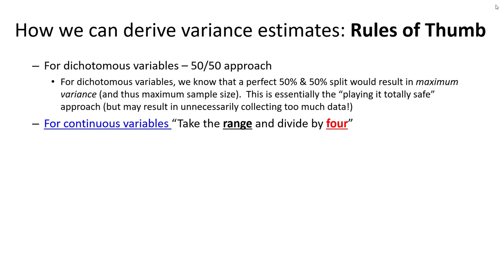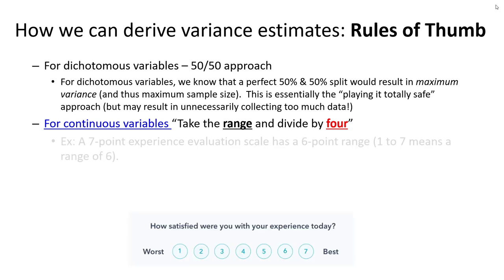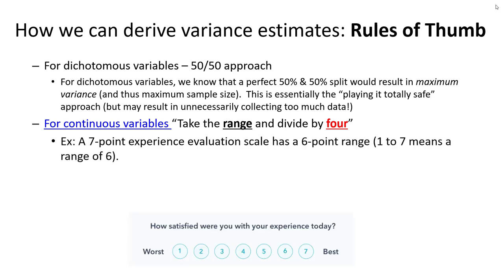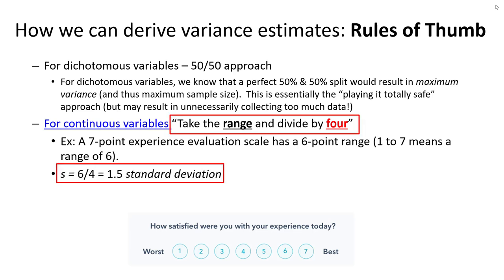For continuous variables with a bounded range — where we know the minimum and maximum values — we simply take the range and divide by 4. In marketing research, we often have bounded continuous variables because we use measurement scales. For example, a 7-point experience evaluation scale has a range of 6, so 6 divided by 4 gives the standard deviation approximation. Squaring that gives a variance estimate of 2.25. Some texts suggest dividing by 6, but range divided by 4 is the most prevalent rule of thumb.